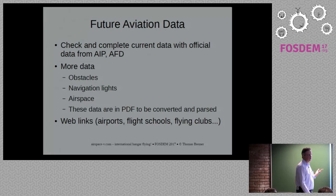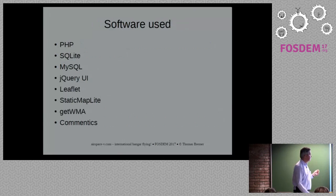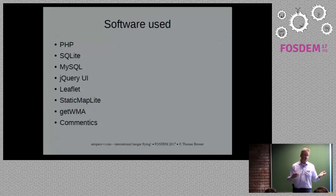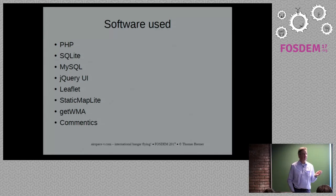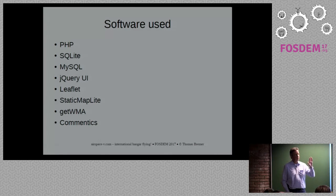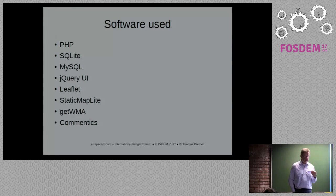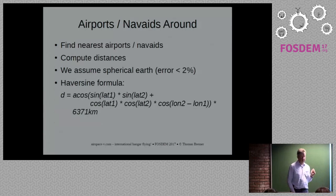The software stack includes PHP, SQLite for aviation data, MySQL for the CMS, jQuery for the UI, Leaflet for rendering maps, and StaticMapLite — which is great for showing a map immediately while the tile map is still rendering so you get a first impression. GeoWMM handles magnetic variation, and Contrexx is the CMS used on the website.